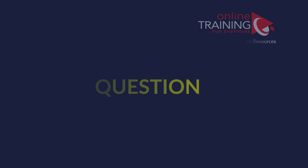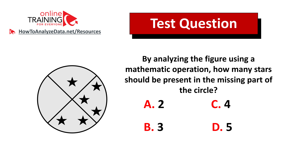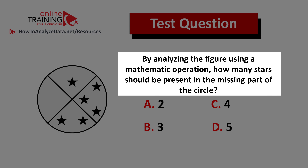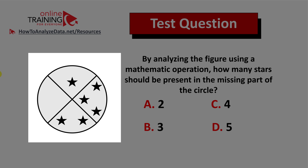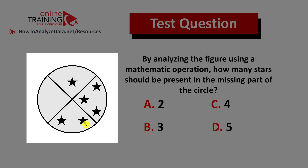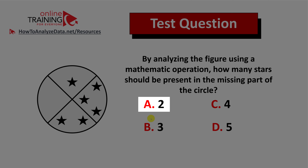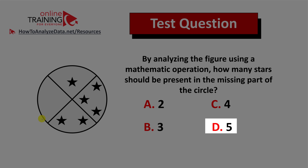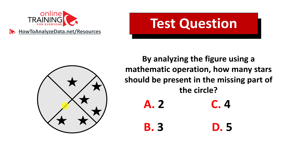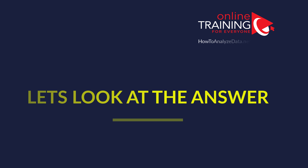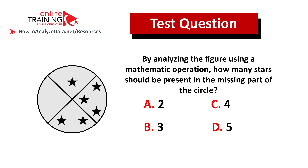Let's look at a tricky question which tests your reasoning as well as math skills. By analyzing the figure using a mathematical operation, how many stars should be present in the missing part of the circle? You have a circle broken into four equal parts. Three parts already have stars: one, two, and then three. Four choices — A: two, B: three, C: four, D: five. Give yourself 10 to 20 seconds.